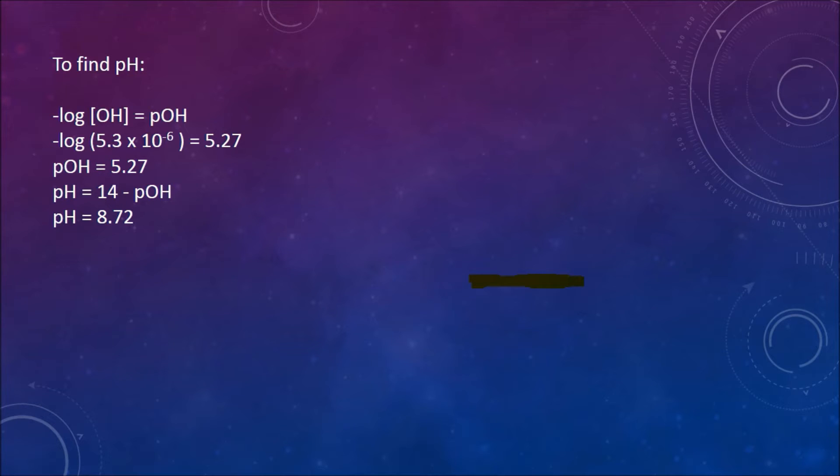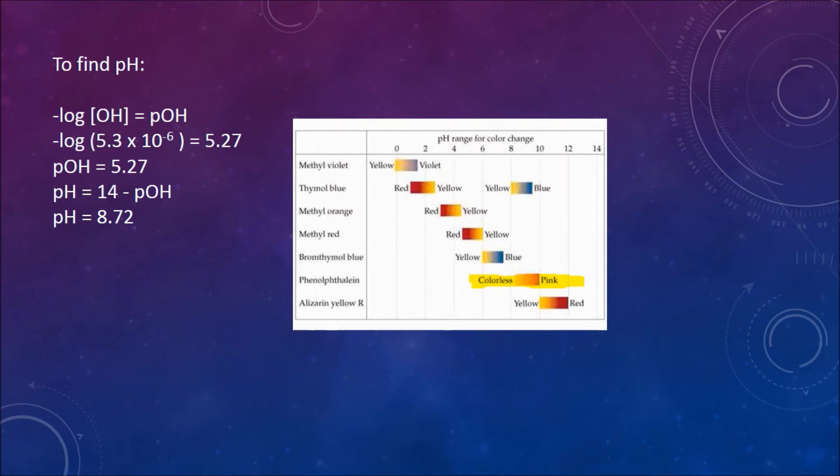Now we know that 8.72 is the pH of the solution at equivalence. Now we must figure out which indicator best fits this. According to our chart, phenolphthalein is the best indicator because it changes color at about 8.79. So we will use phenolphthalein as our indicator.